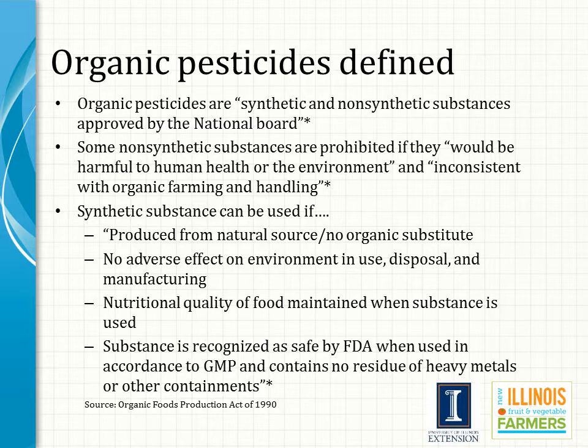This is the official definition of what an organic pesticide is. In essence, an organic pesticide can be either synthetic, also known as man-made, or non-synthetic, also known as naturally occurring, that's approved by the National Organic Standards Board.